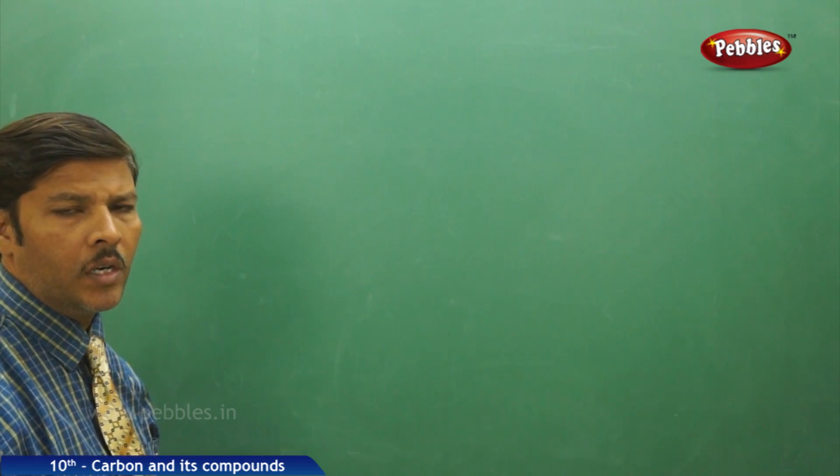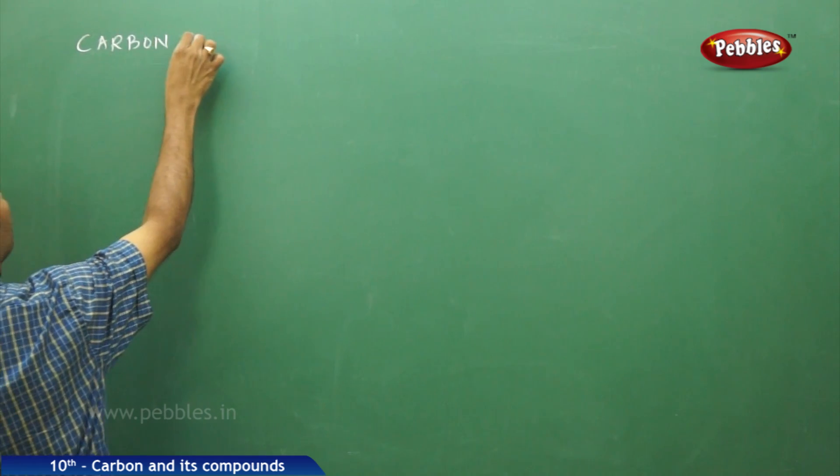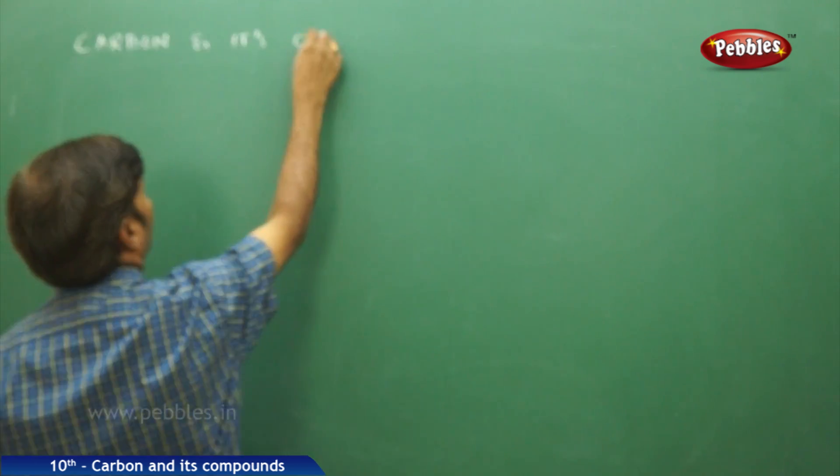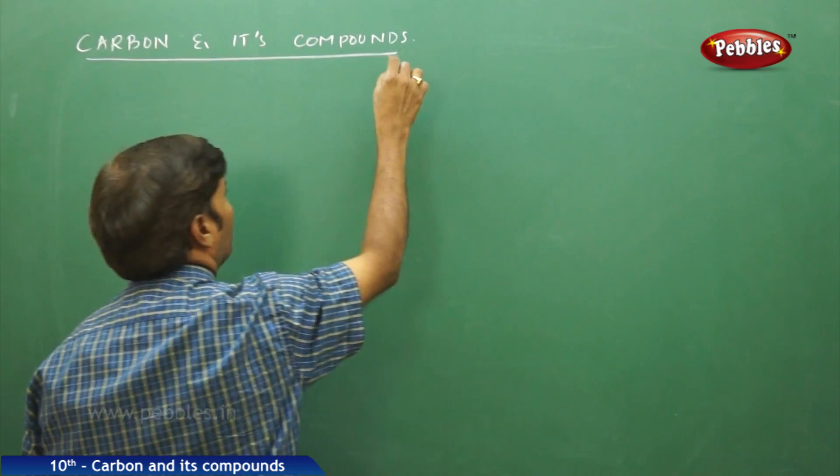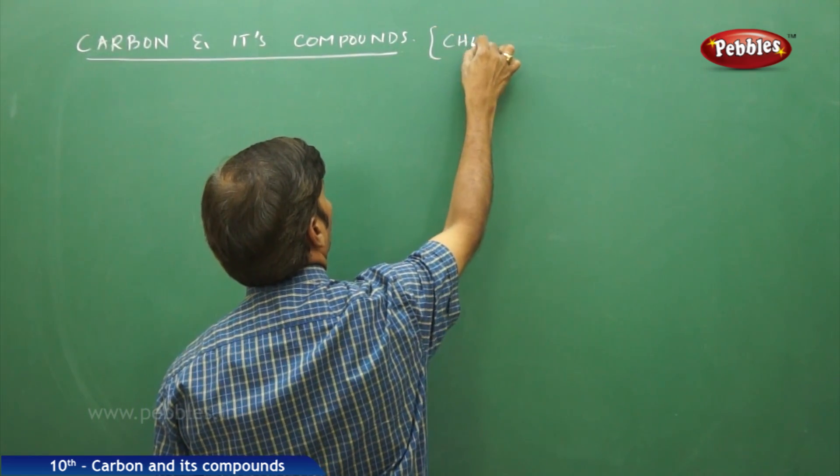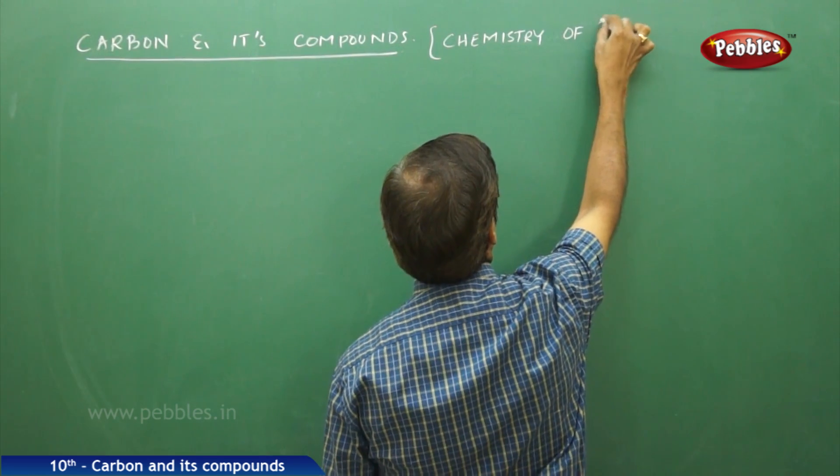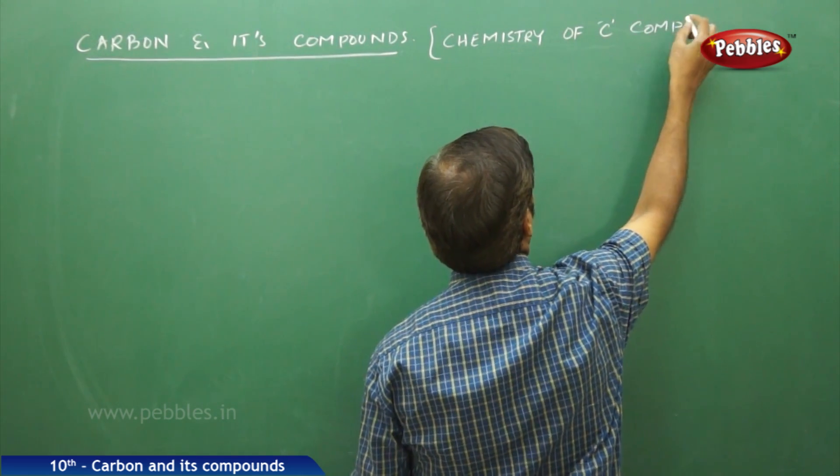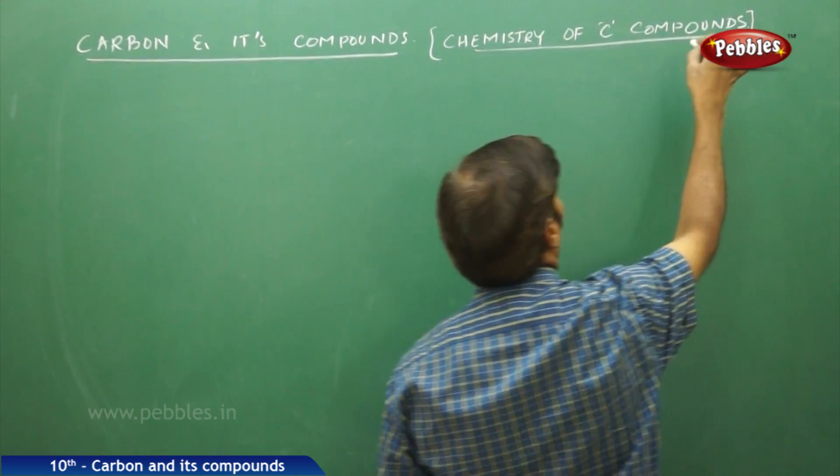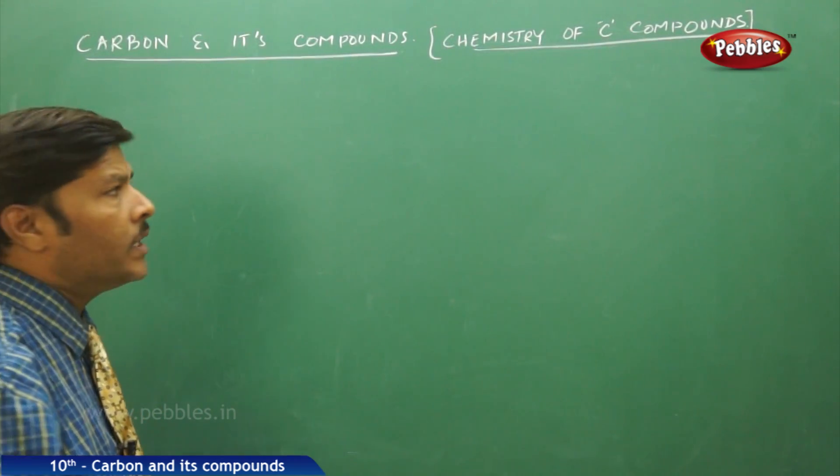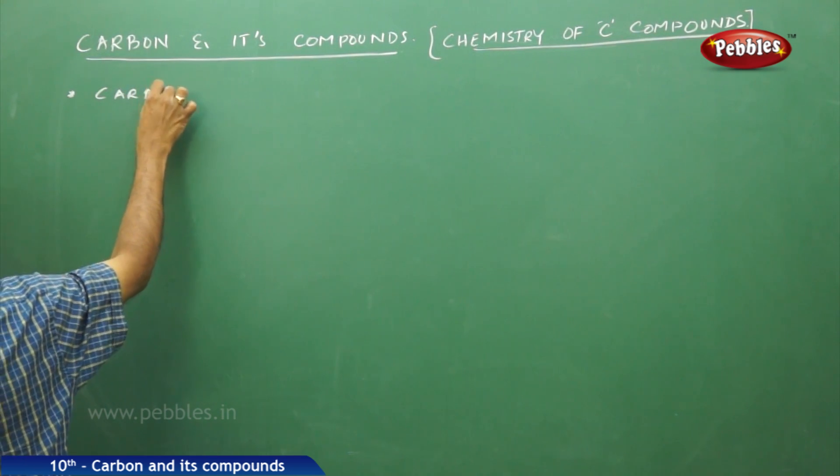The next part of the discussion, the next chapter under our discussion is Carbon and its compounds. It is also called chemistry of carbon compounds. That means indirectly here we are speaking about carbon chemistry.